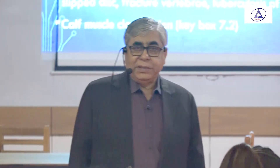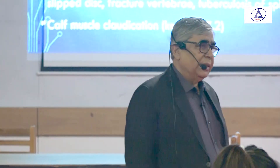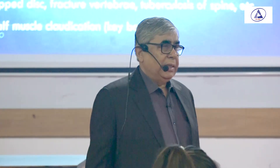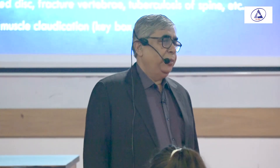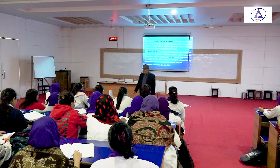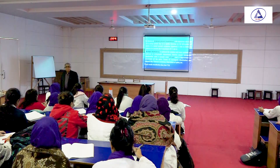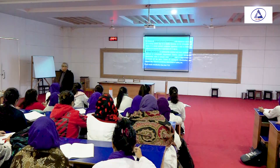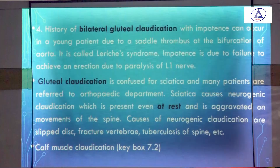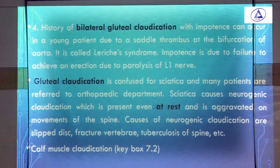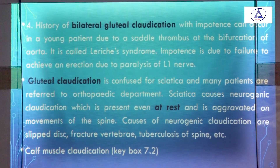When referred to orthopedic surgeons or neurosurgeons, these patients are treated for sciatica. Removal of the intervertebral disc relieves the pressure and the patient improves dramatically. When the spine is fractured it can be fixed, and tuberculosis of the spine requires long-term treatment. Then there is also calf muscle claudication, in addition to gluteal claudication.